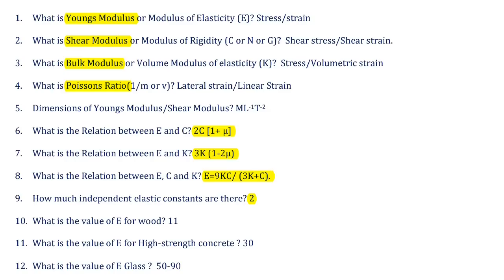Sixth and seventh questions: what are the relations between E and C, and between E and K? Please remember — for E and C, use a plus sign; for E and K, use a minus sign. The relation between E and C is: E = 2C(1 + μ). The relation between E and K is: E = 3K(1 − 2μ).